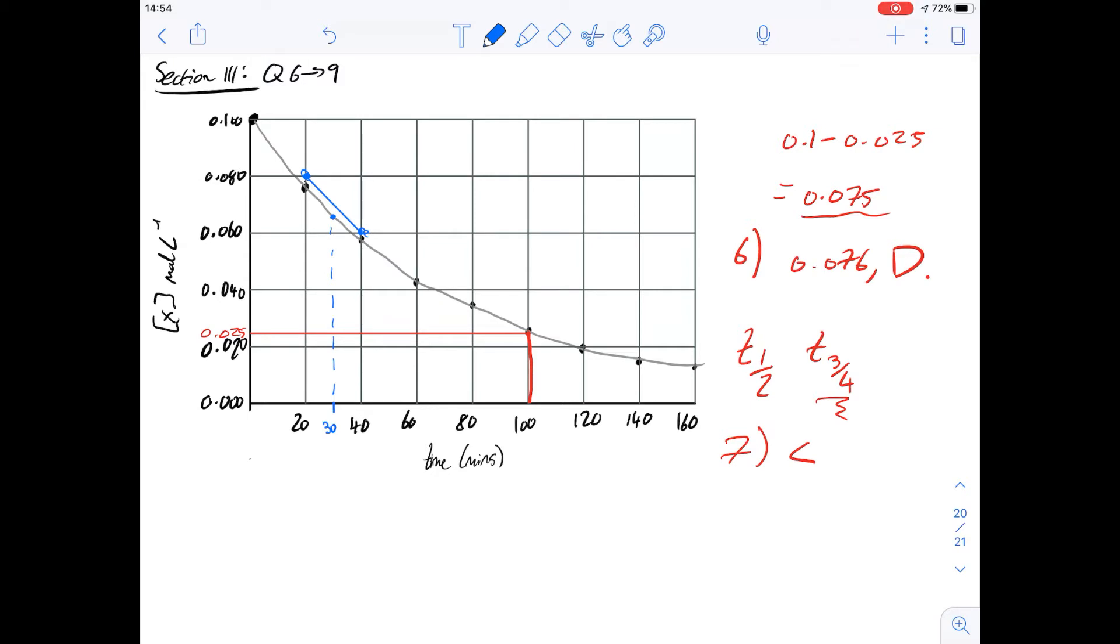So the rise over run which would be the gradient is going to be 0.02 divided by 20 which gives us an answer of 0.001 and of course the symbols for this would be this here this would be the unit for it. So 0.001 is 1 times 10 to the minus 3 of course.